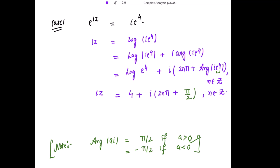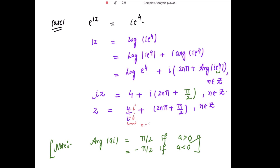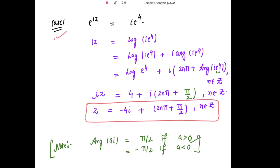On the left-hand side we have iota z, so dividing both sides by iota to get z: z equals 4 divided by iota plus 2n pi plus pi by 2, where n belongs to the integers. Multiplying and dividing 4 by iota, since iota squared equals negative 1, we get minus 4 iota. So z equals 2n pi plus pi by 2 minus 4 iota is the set of solutions for Case 1.